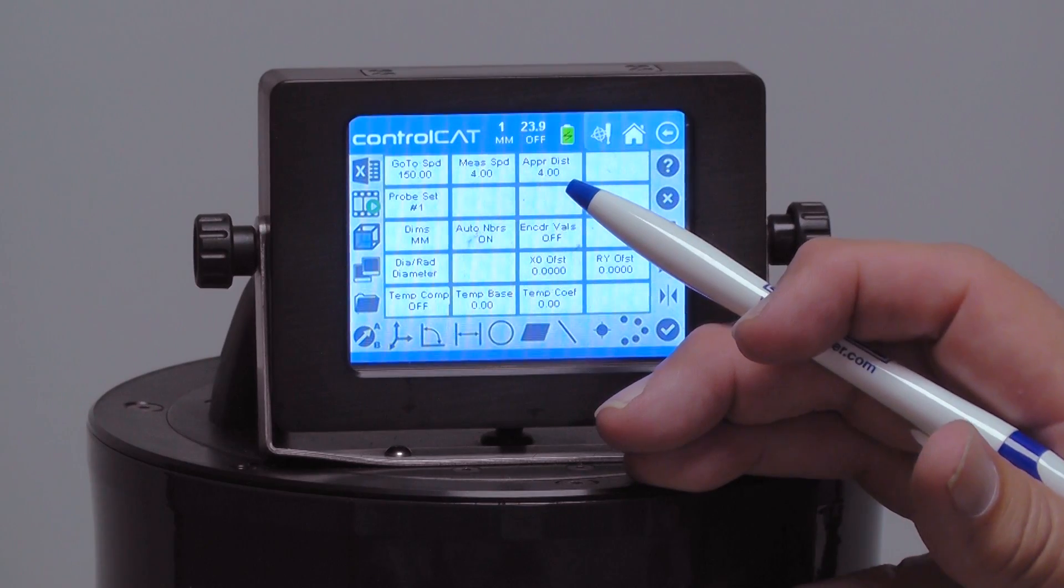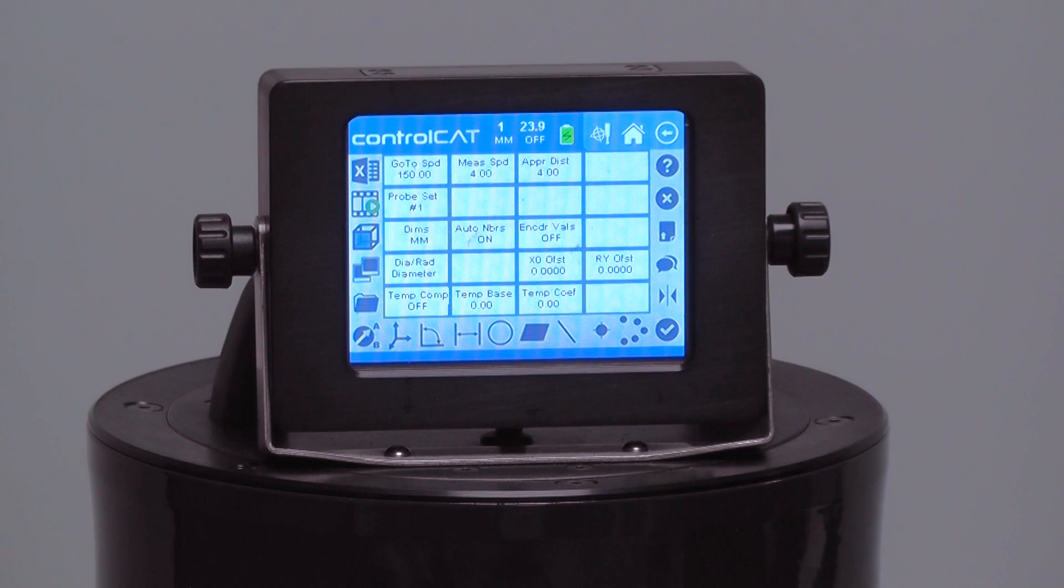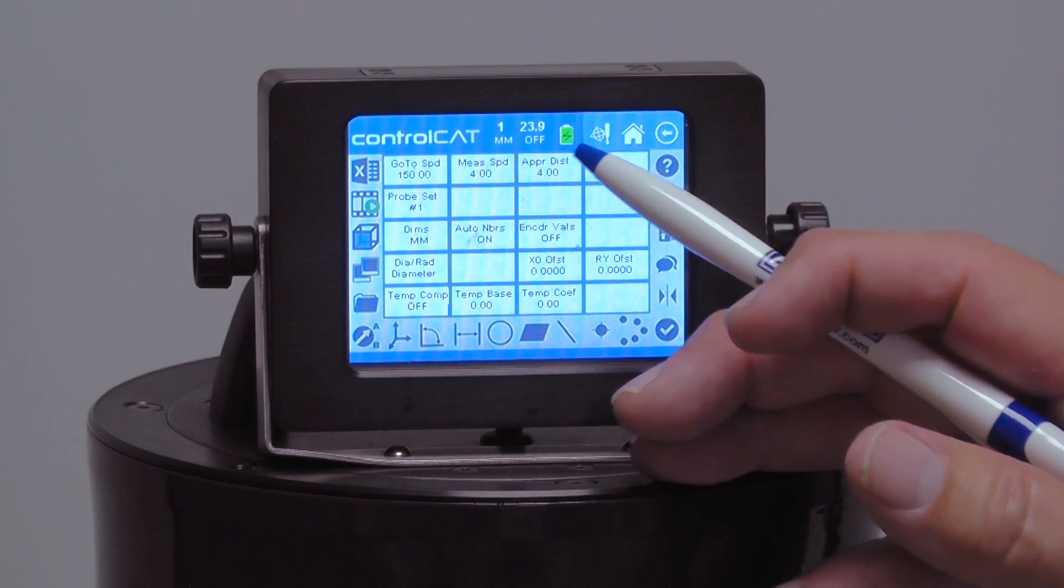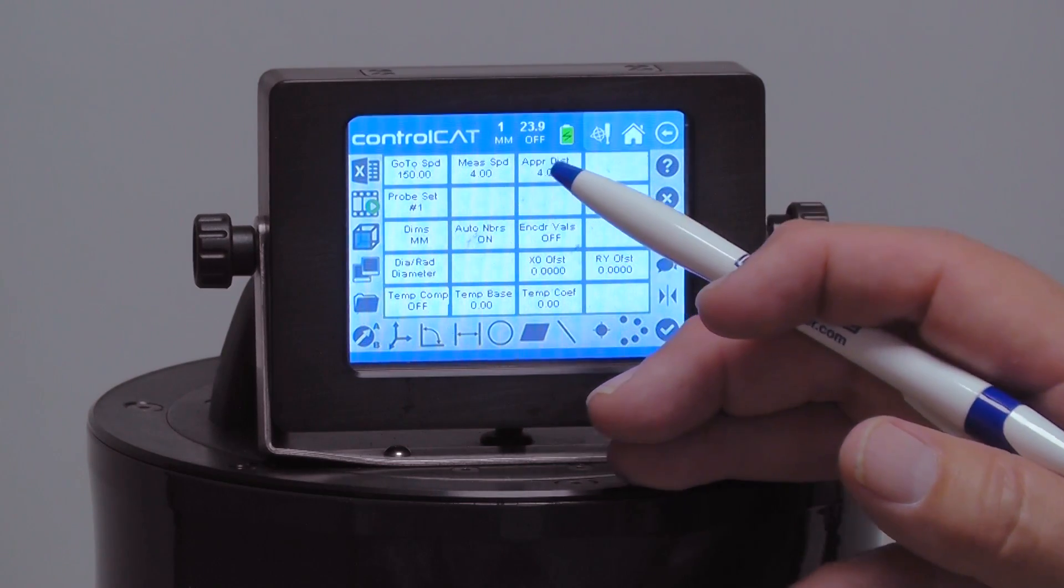These again are adjustable. Some people like to do it five millimeters, four millimeters, three millimeters. It also will be affected on the back-off distance when you take a measurement, so you can play with those numbers, but usually between three and five millimeters is what we're set at.